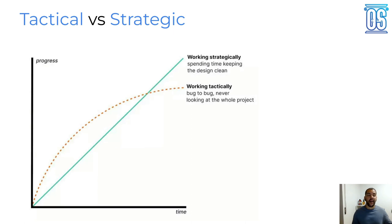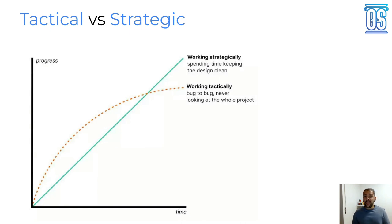The book defines a person who goes to the extreme on tactical mode: the Tactical Tornado. This is a person who moves quickly and solves a lot of problems, but doesn't think about the long term. What happens is that the code becomes even harder to understand over time. Do you have a tactical tornado inside your team? How hard is it to handle that kind of person? Please put your comments here and of course give me a like.